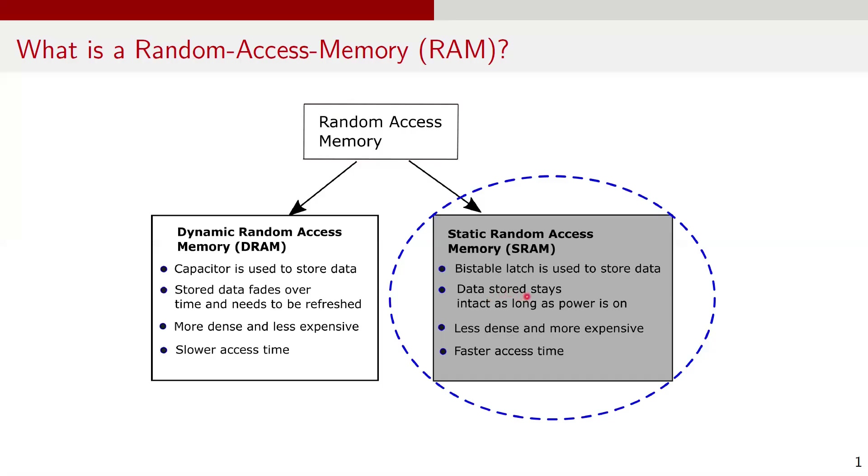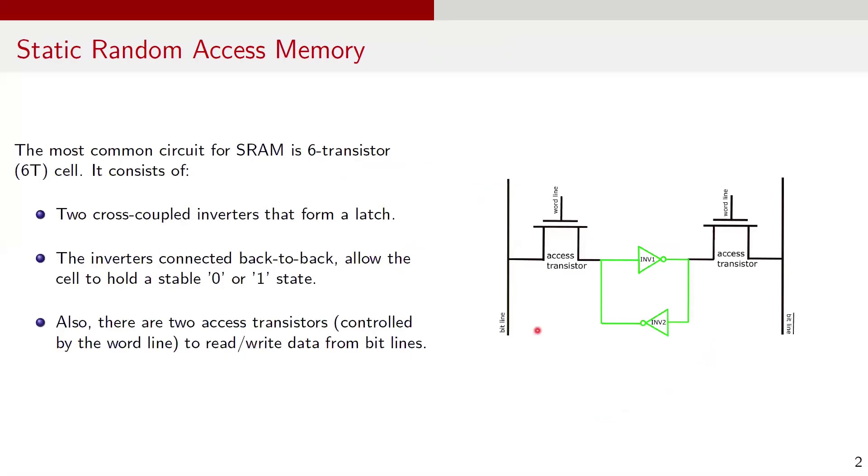In this video, I will talk about the static RAM block. Let's start with the digital circuit. The most common circuit for SRAM is 6-transistor or 6T circuit. It consists of two cross-coupled inverters that form a latch, which is the fundamental concept in SRAM design.